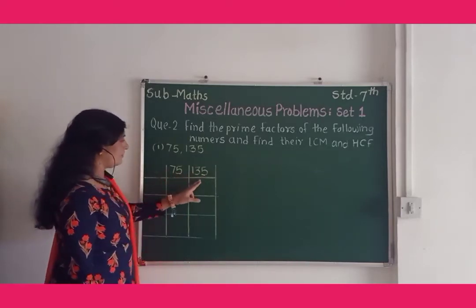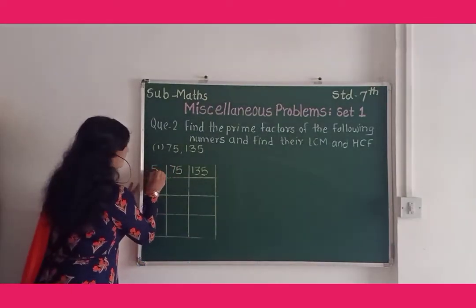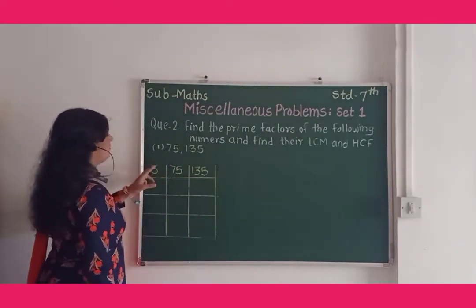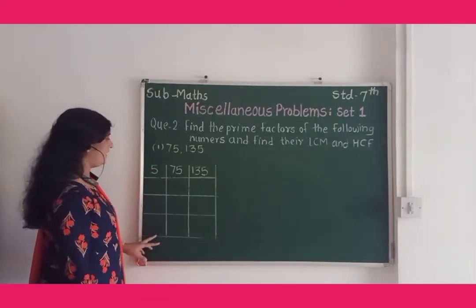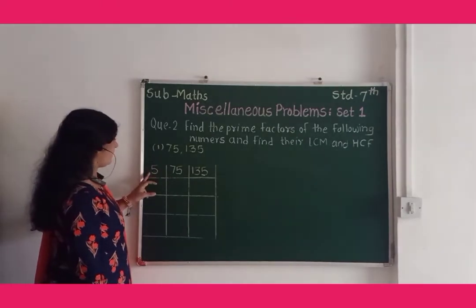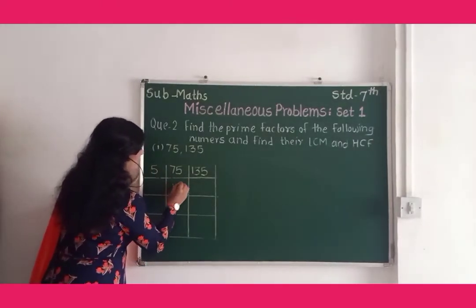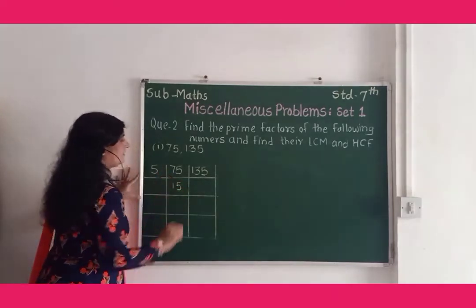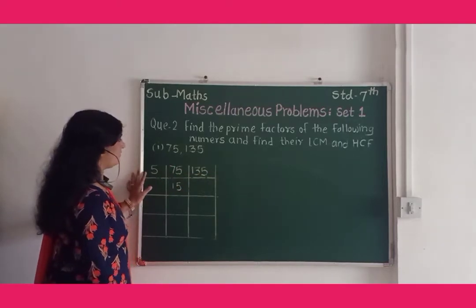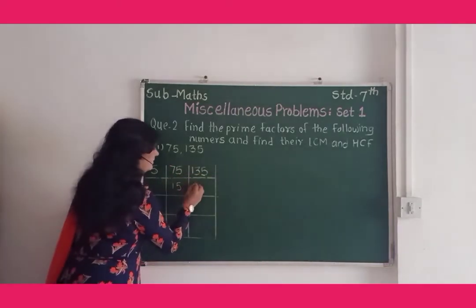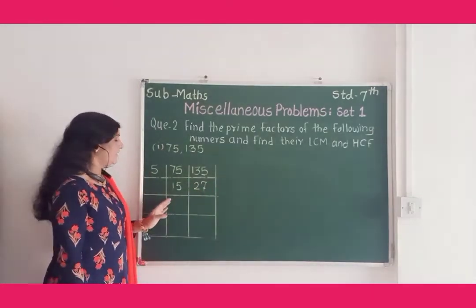These two numbers are divisible by 5. So here we write 5 — we write prime factors in this column. When 75 is divided by 5, the answer is 15. When 135 is divided by 5, the answer is 27.